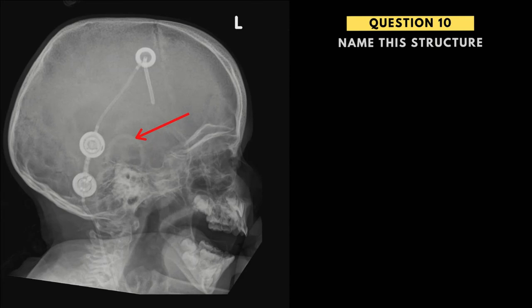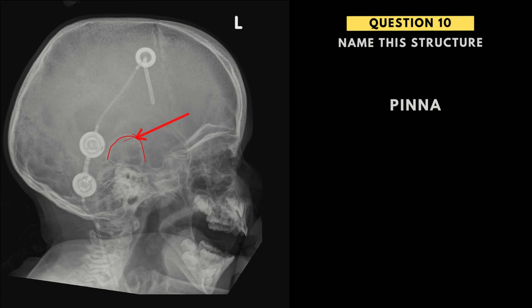Moving on to the last question — this scan is assessing a VP shunt, a ventricular peritoneal shunt in a child most likely with hydrocephalus, where CSF needs to be drained into the abdomen to prevent pressure buildup in the cranial vault. We're looking at the shunt to see if there are any fractures. What I've labeled here is this impression that goes around in a curved shape — this is actually the pinna, more specifically the helix portion of the pinna of the ear. I want to get across that not only bones make impressions on X-ray — soft tissues can also give these impressions, including the soft tissue of the neck, lips, and ear. Don't be confused that this is a bony structure; this is the pinna of this child's ear.